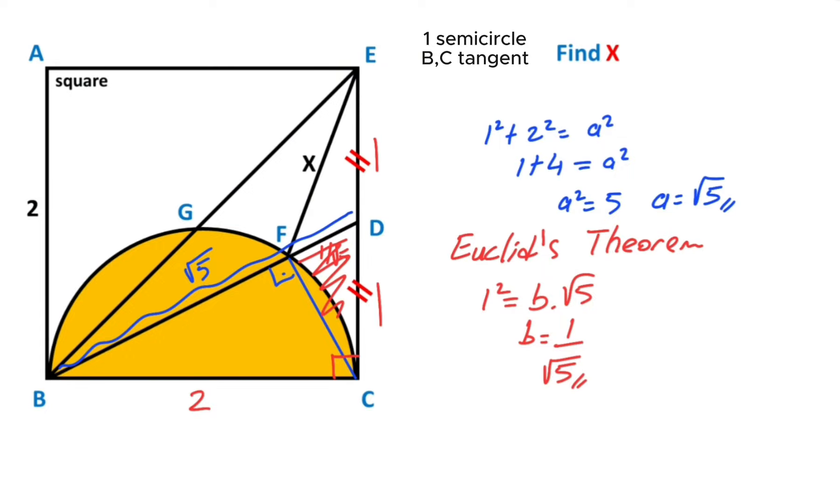Then for this triangle, if we apply Pythagorean theorem, we get this length as 2/√5. And likewise, for this triangle, if we apply Pythagorean theorem, this length we get as 4/√5, right? Okay.